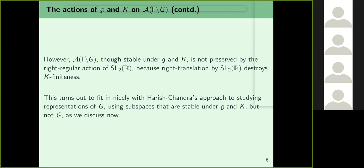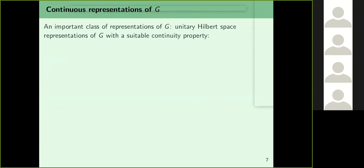Although SL2(R) does not preserve A(G/Gamma), one might like to think of it as a representation of SL2(R). Unfortunately K-finiteness prevents this, but it is almost true: although SL2(R) does not preserve A(G/Gamma), its Lie algebra does, and the restriction to K also preserves it. This fits nicely with Harish-Chandra's theory of (g,K)-modules.